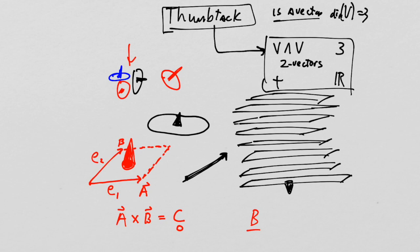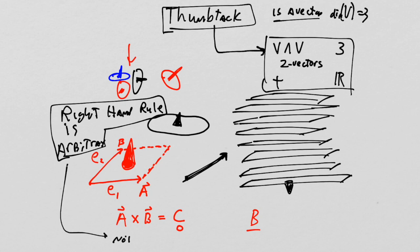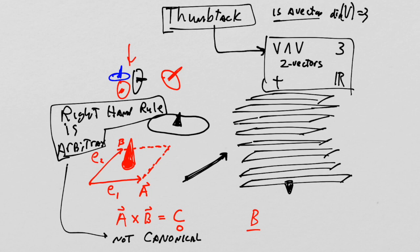Now about the right-hand rule: this is a bit of a problem, because the right-hand rule is arbitrary. And that's a problem, because everything here is supposed to be canonical — and it's not canonical.